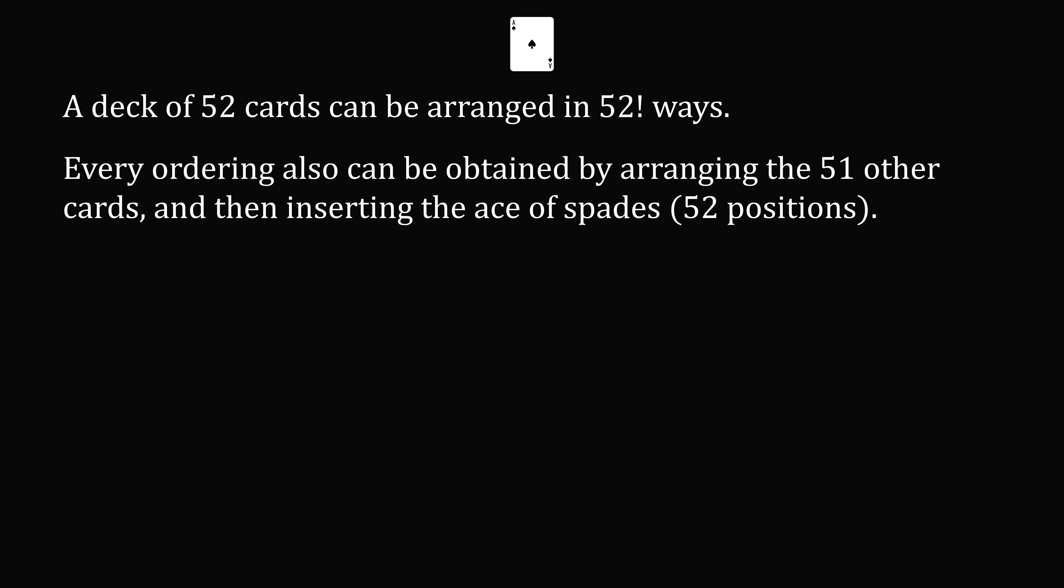So let's do this calculation. We'll start out with the ace of spades following the first ace. A deck of 52 cards can be arranged in 52 factorial ways. Every ordering can also be obtained by arranging the 51 other cards and then inserting the ace of spades in one of 52 positions.